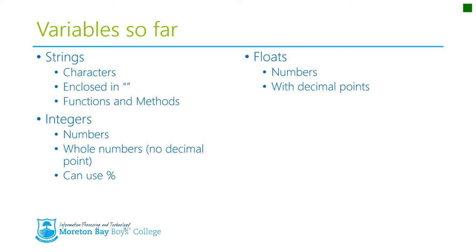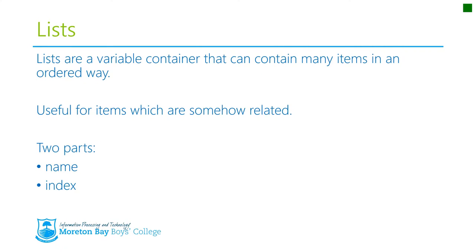Tonight we're going to look at a new one called lists. Basically, lists are a variable container that can contain many items in an ordered way. Thinking back to our analogy of variables being containers — where each container would normally contain one item — lists can actually contain a number of different items. It's really useful to store items which are somehow related to each other, such as student details or grade results. They're variables that are somehow connected, and it keeps them together.